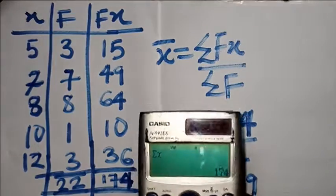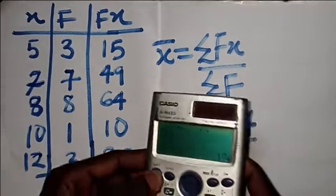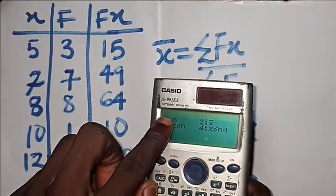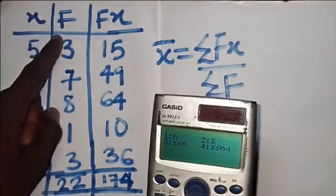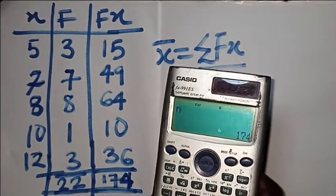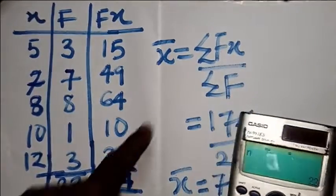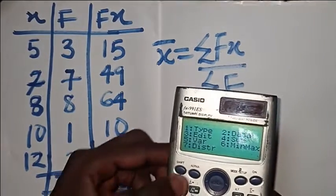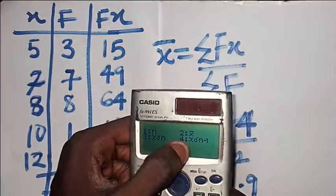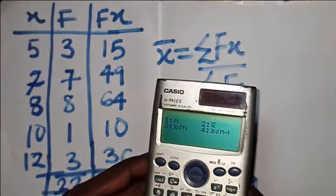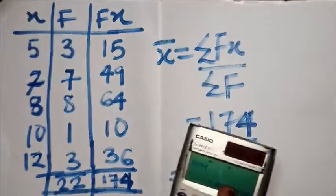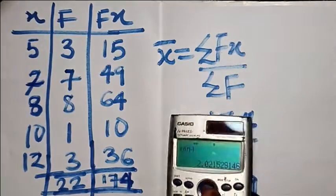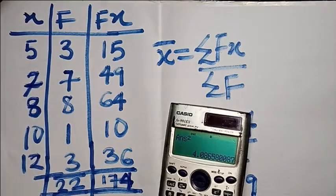To get summation F (which is 22), click Shift then 1, then go to number 5 'Var'. Click on N — N is the same as your total frequency F. Click equals and you get 22. To get the mean, click Shift then 1, go to Var number 5, and click number 2. For standard deviation, click number 4. Standard deviation is the square root of variance, so squaring the standard deviation gives you the variance.